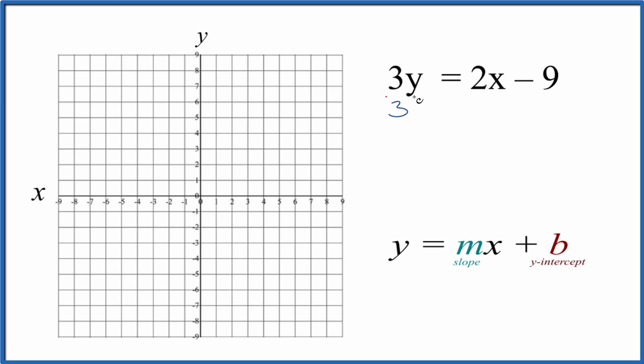Let's take and divide both sides by 3, because that'll give us y by itself on this side. 3 divided by 3, that's 1, so y equals 2x over 3, and we have negative 9 over 3. That's just negative 9 divided by 3 is negative 3.